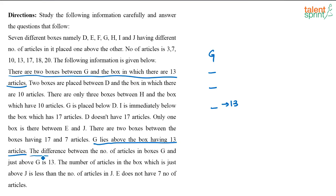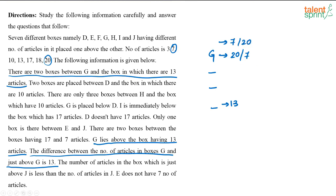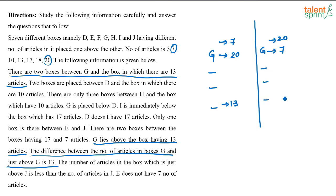Next, the difference between the number of articles in box G and the box just above G is 13. Looking at the given numbers, the only pair with a difference of 13 is 20 and 7 — since 20 minus 7 is 13, there is no other possibility. So either G is 20 and the box above G is 7, or G is 7 and the box above G is 20. We will try both cases.